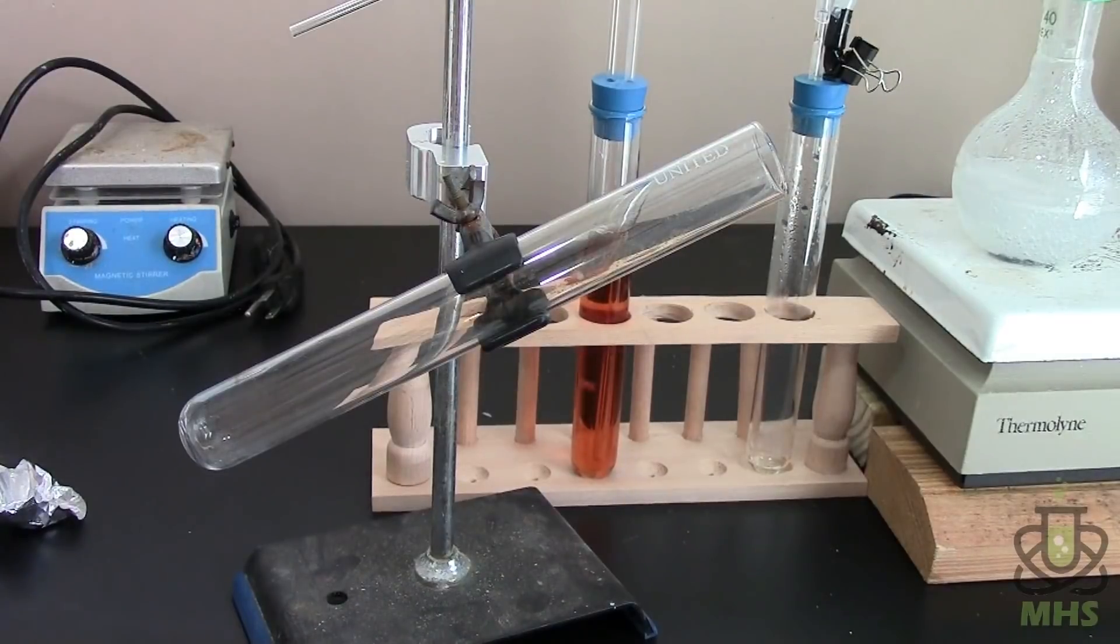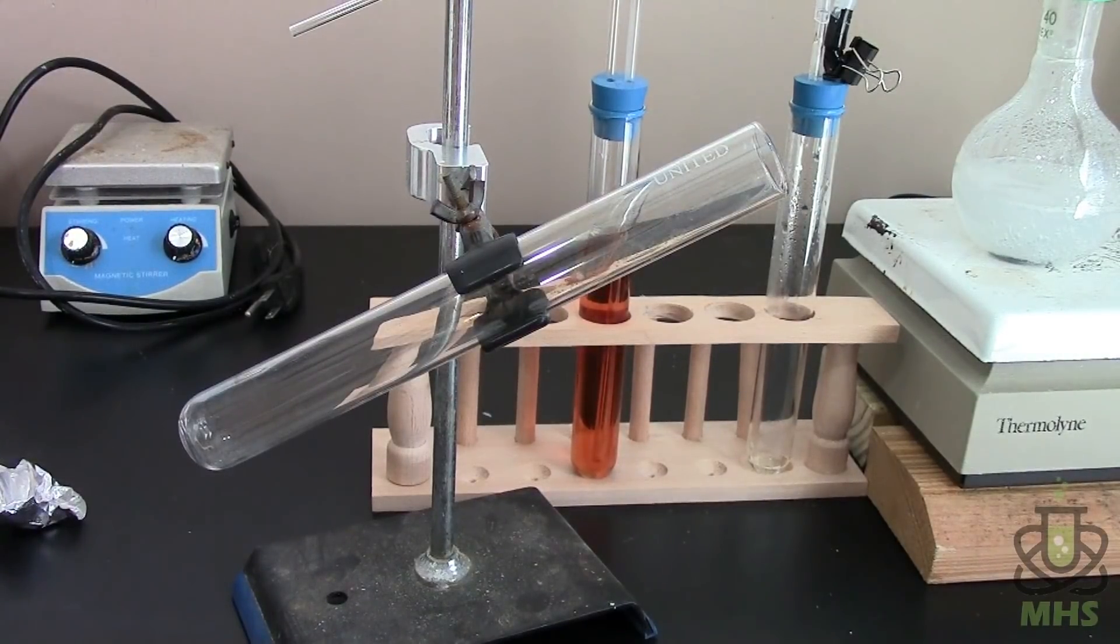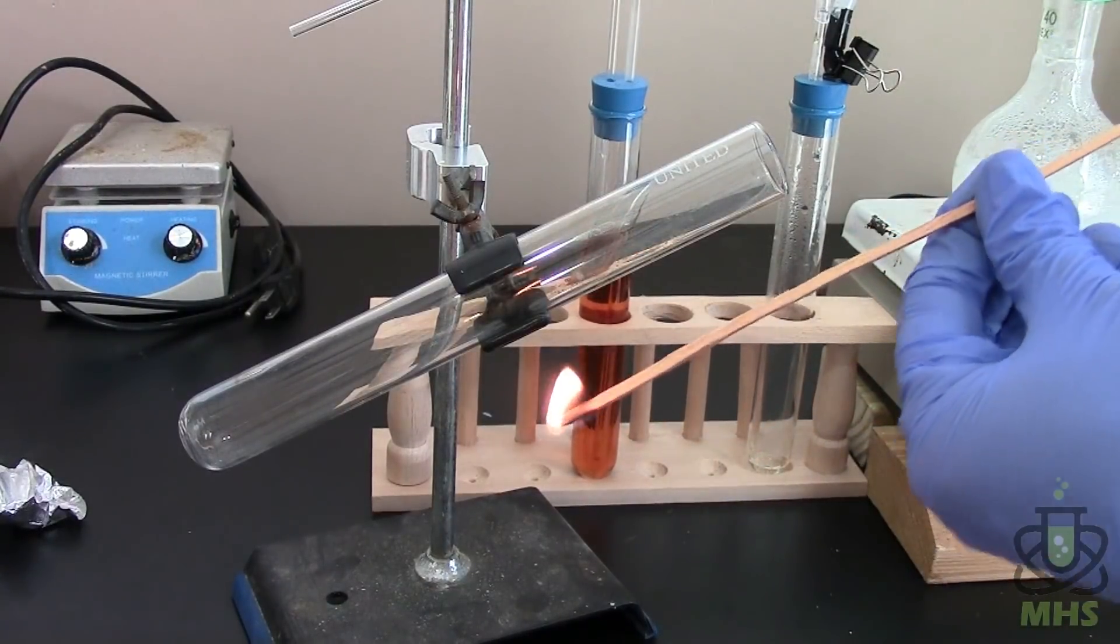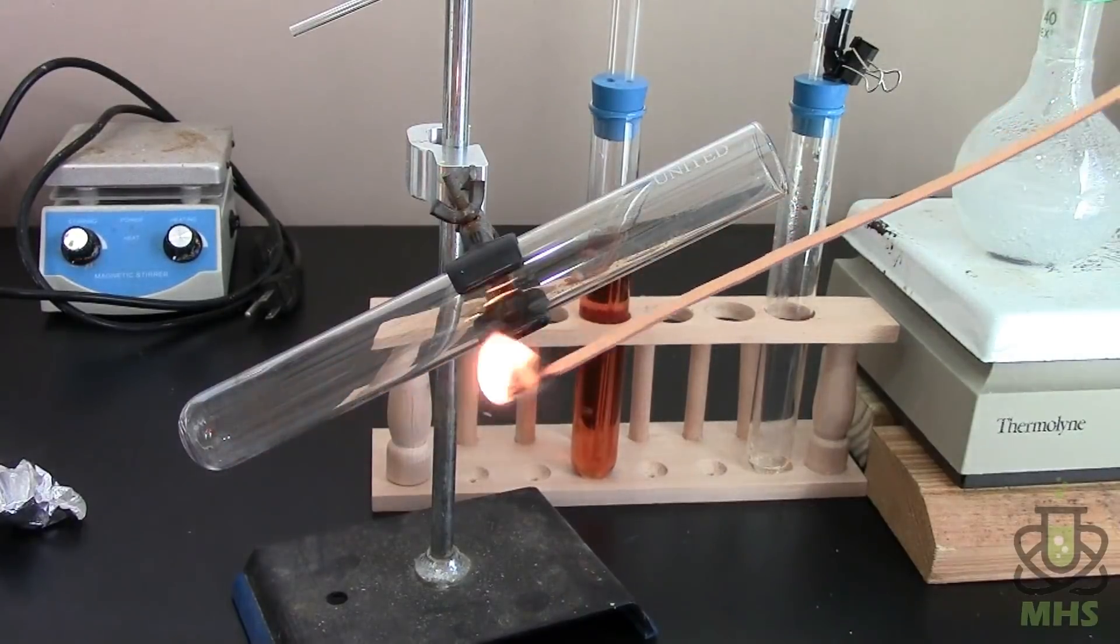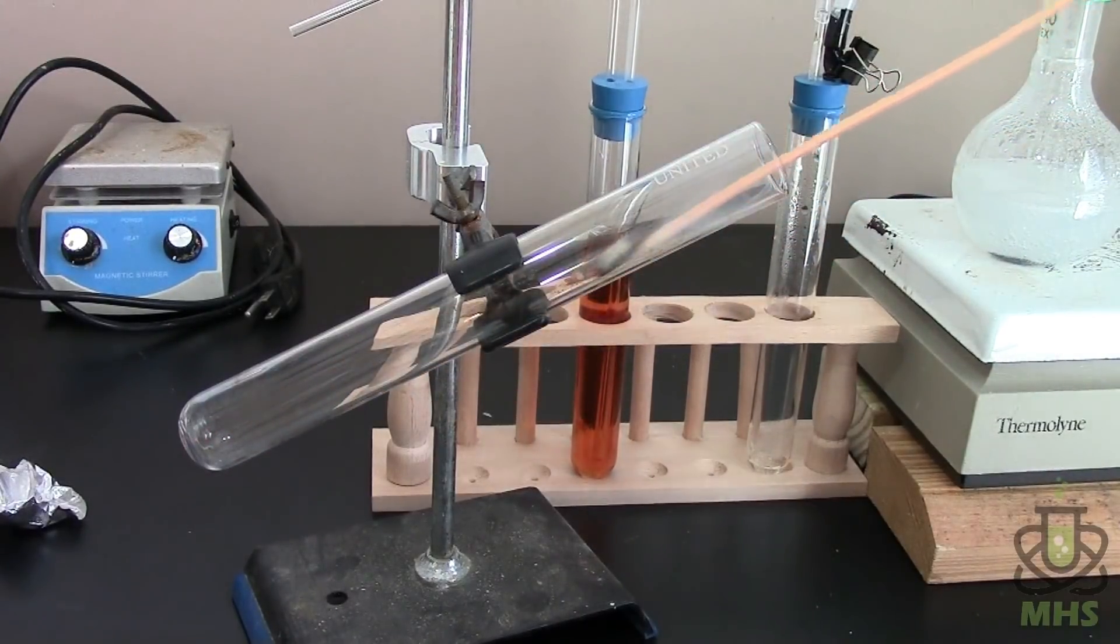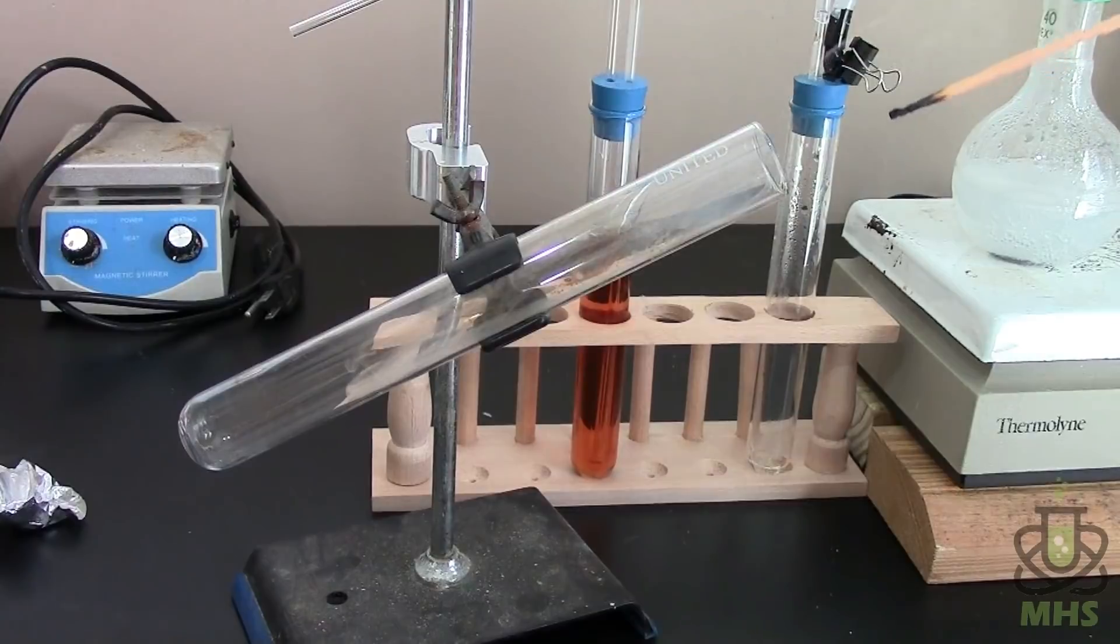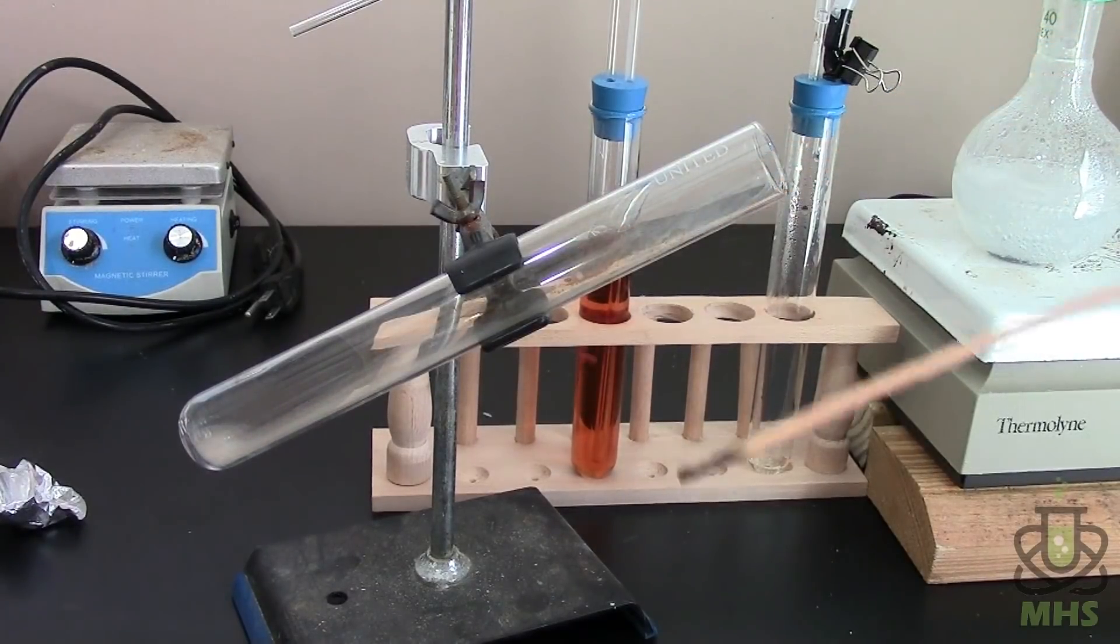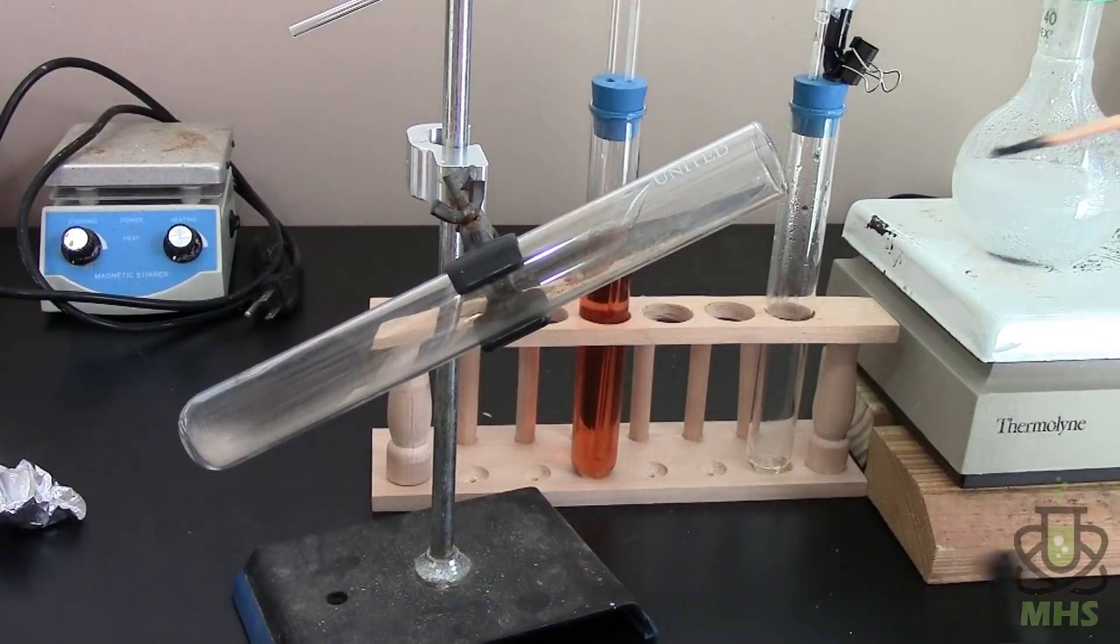So the test I'm going to do is the lit splint test which will tell me if this is a non-combustible gas. So I've got an extra long splint here and we'll plunge it into the gas and see if it extinguishes the fire. Hey! Awesome! Started about right there. So this is actually pretty full. That's great. Let's do it again.